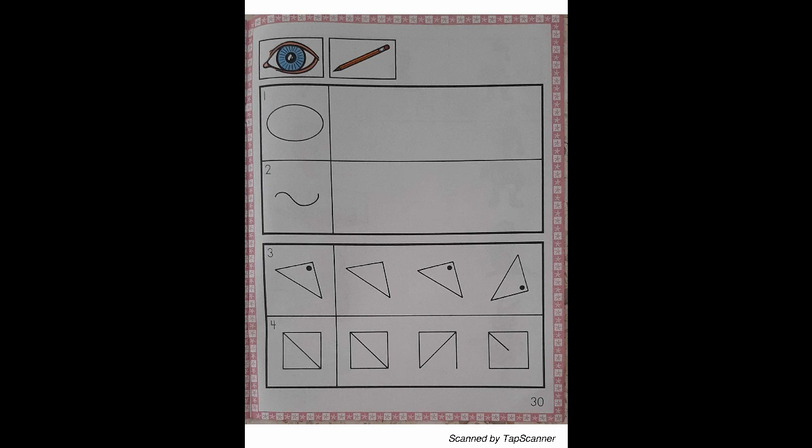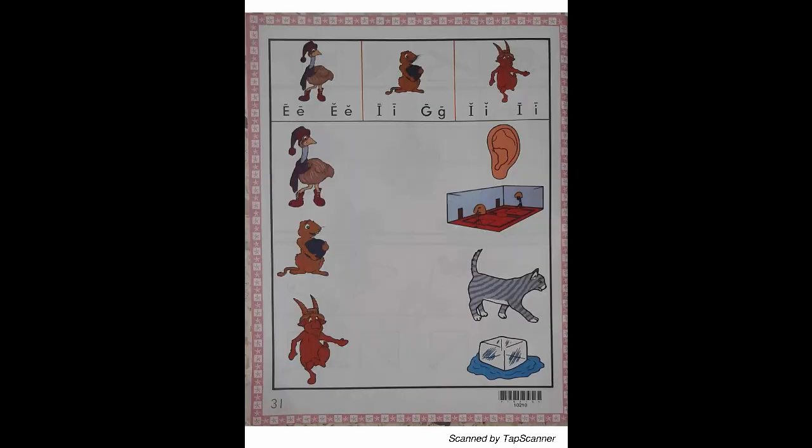Page 31, letter sound review. Over the green line. Listen carefully. Put your finger on the picture of the Emu that is over the green line. Say, Emu reads I. With your pencil, draw a line from the Emu to the E sound letter.